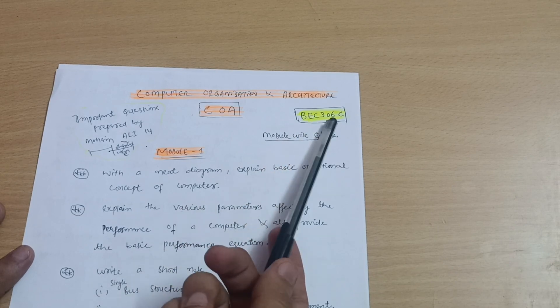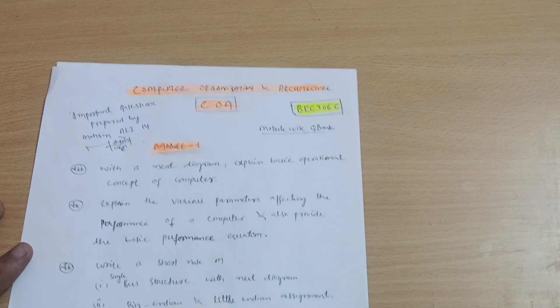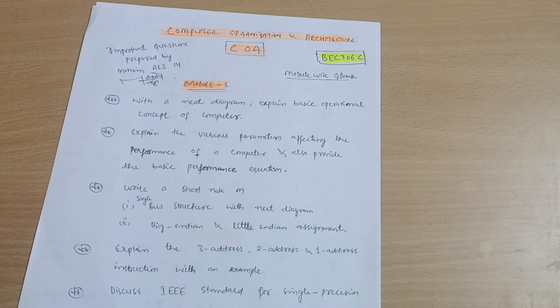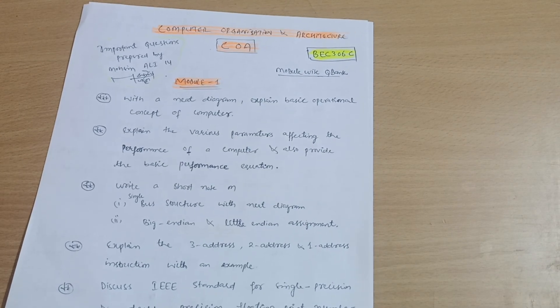If you want to pass only, you have to cover one module among three modules fully. The rest of the two modules, you should take two important questions each, so that you can easily pass the subject. If you want to score, then you have to definitely go for all the modules. You have to cover all the portions.